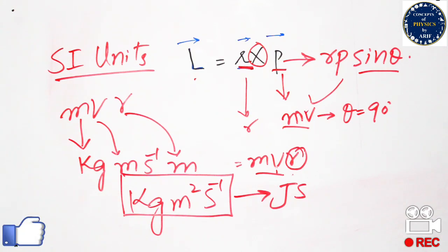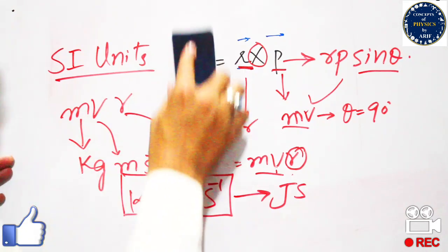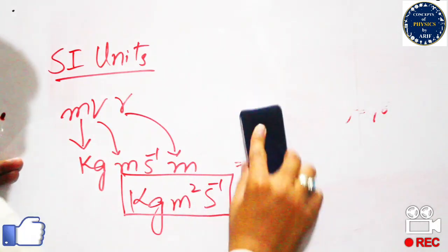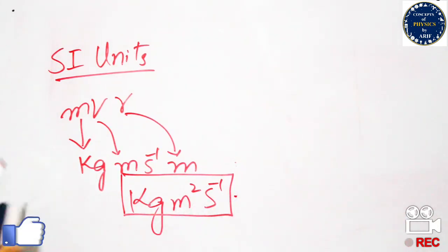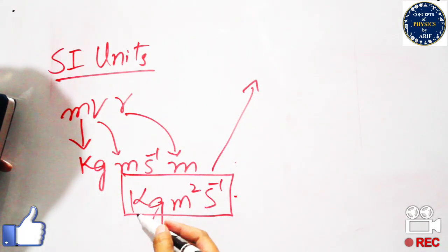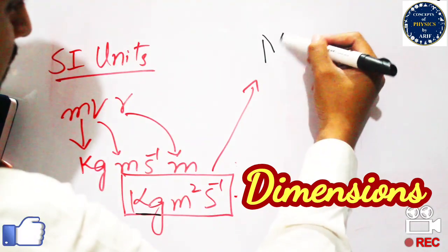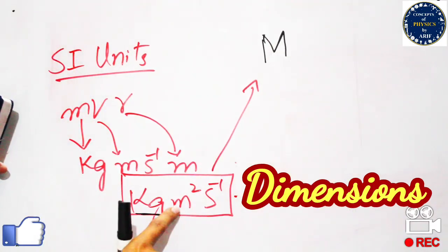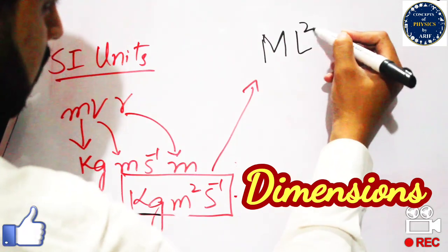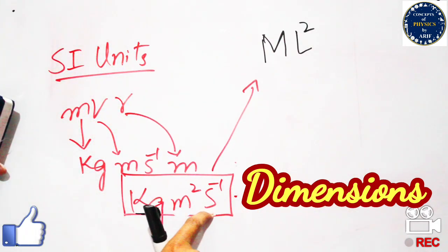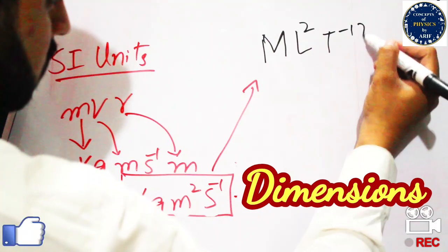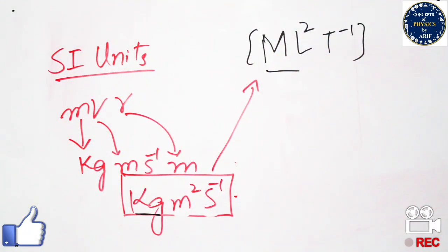So the SI units of angular momentum are joule-seconds or kilogram meter squared per second. For dimensions: kilogram corresponds to mass M, meter squared corresponds to length L squared, and per second corresponds to time T inverse. Therefore the dimension of angular momentum is M L squared T to the power of negative one.